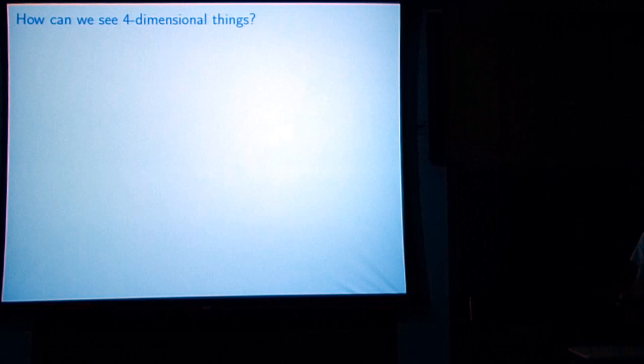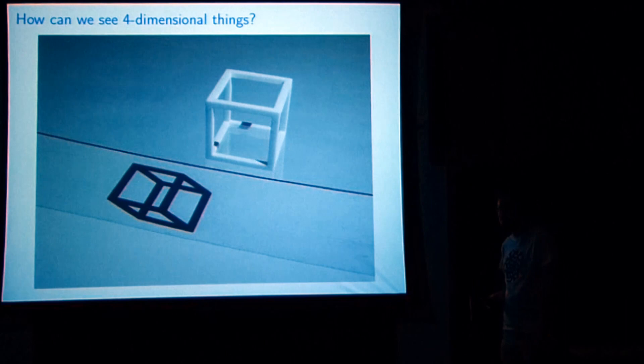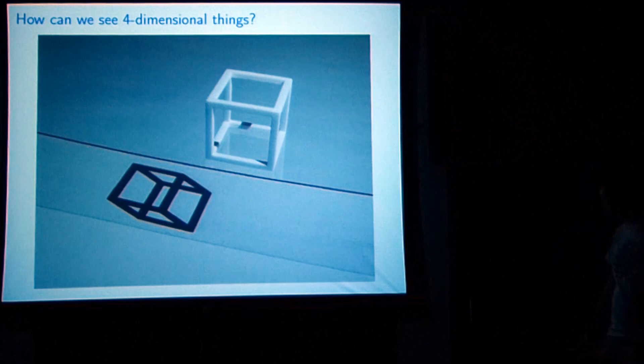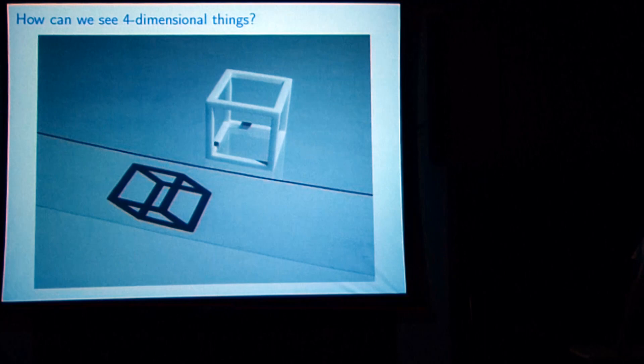Here's the example which starts this whole process. This is a three-dimensional object — a cube — and here is a shadow of that cube which has been squished down onto two dimensions. The idea is that now it's down in two dimensions, a two-dimensional person — this goes back to the ideas of Flatland — if you're a two-dimensional person living in the plane here...